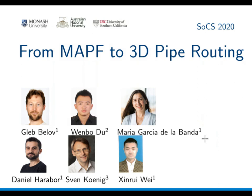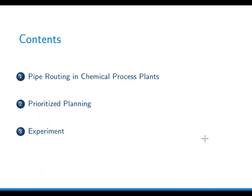From multi-agent pathfinding to three-dimensional pipe routing — this is a joint result with Wenbo, Maria, Daniel, Sven and Shinrui. We talk about pipe routing in the context of chemical process plants, then we adapt prioritized planning to this problem, and conclude with experimental results.